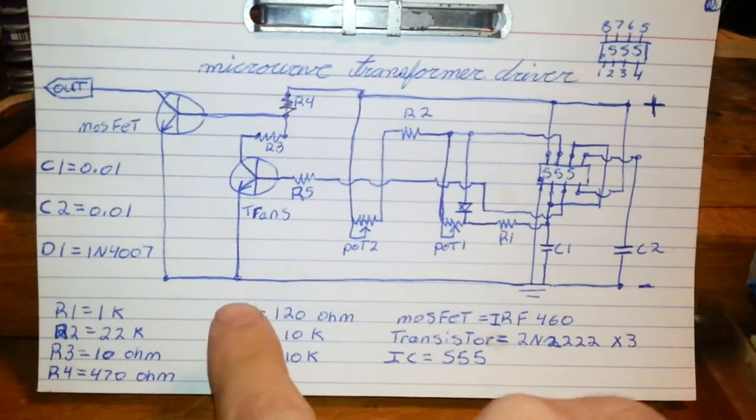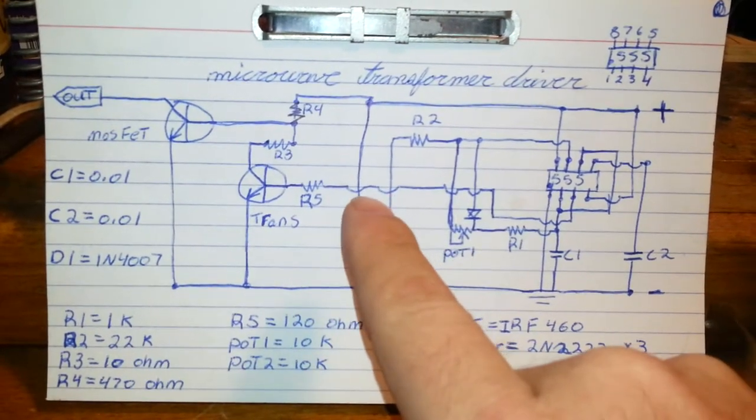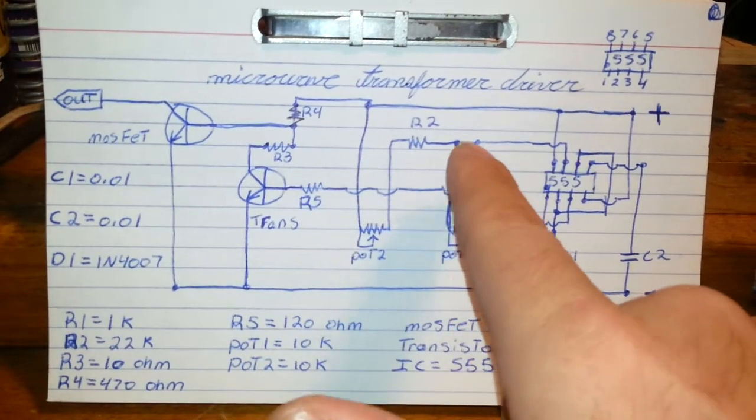Each of the dots on there, that's the connection. Little wires looks like they're jumping across right there. Those are just jumpers. No connection to those. Just the dots are the connections.